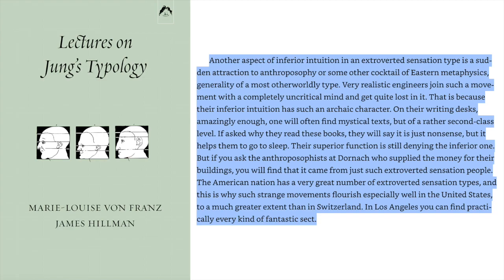Another aspect of inferior intuition in an extroverted sensation type is a sudden attraction to anthroposophy or some other cocktail of eastern metaphysics of a most otherworldly type. Very realistic engineers join such a movement with a completely uncritical mind and get quite lost in it — that is because their inferior intuition has such an archaic character. On their writing desks, amazingly enough, one will often find mystical texts, but of a rather second-class level. If asked why they read these books, they'll say it's just nonsense, but it helps them get to sleep. Their superior function is still denying the inferior one. The American nation has a very great number of extroverted sensation types, and this is why such strange movements flourish especially in the United States. In Los Angeles, you can find practically every kind of fantastic sect.